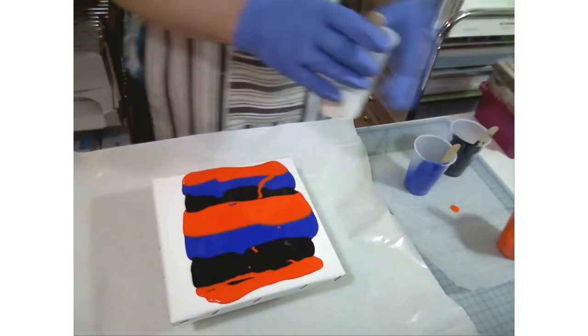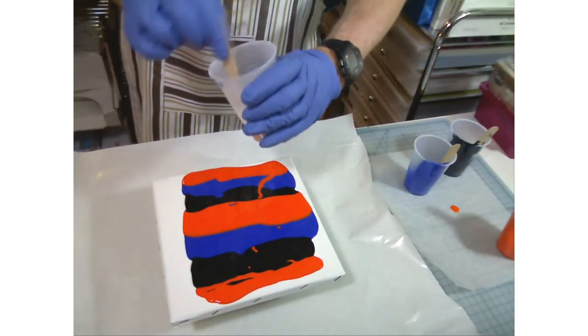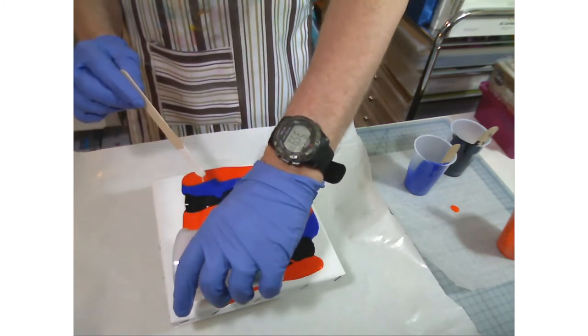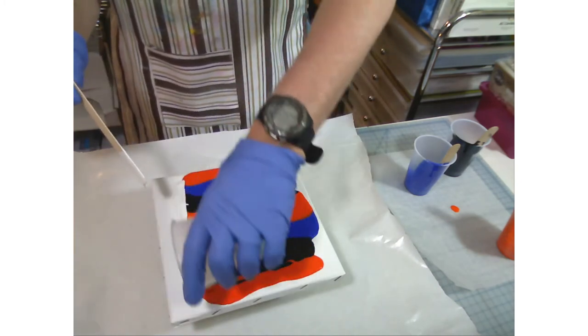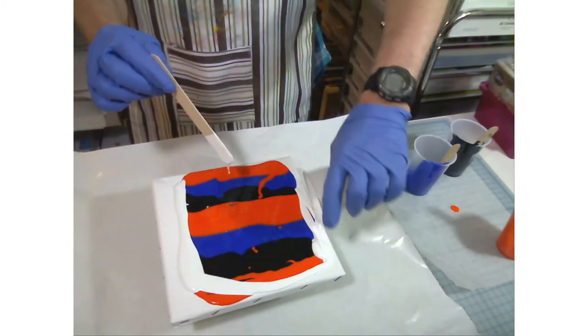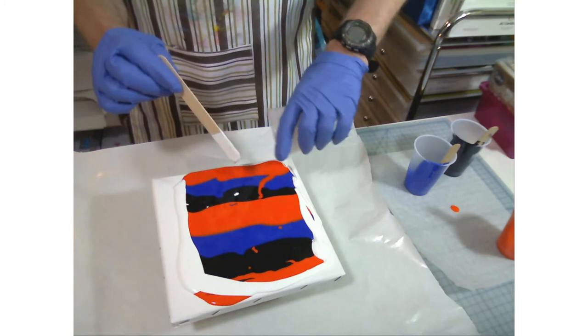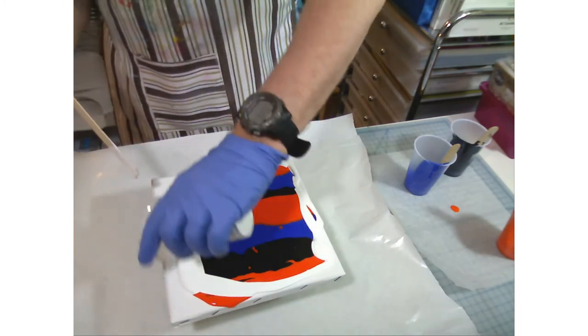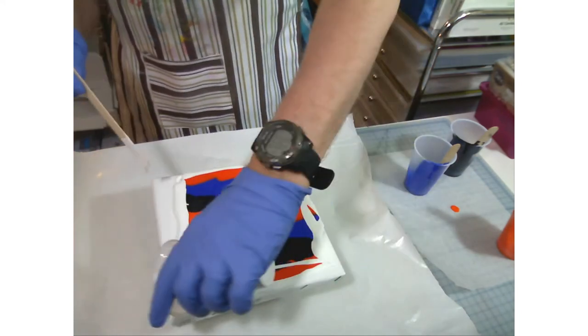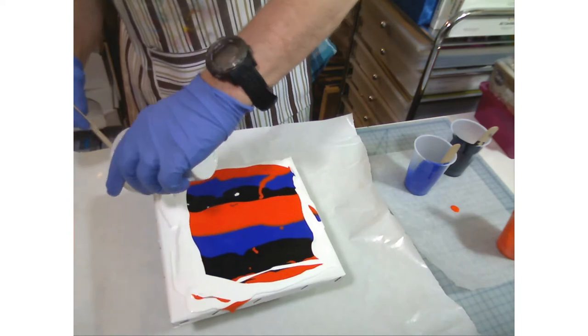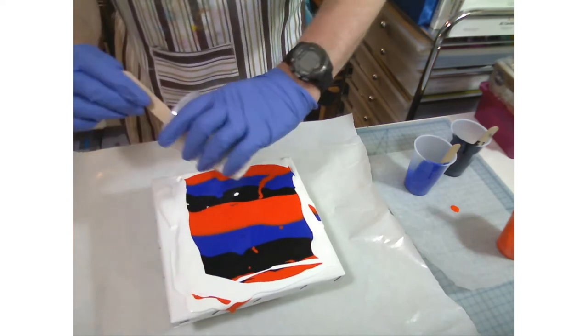I'm going to pour a little bit more of the orange at the top. Now I've got the white, so I'm just going to kind of pour along the edges, all the way around it. I have no idea what this is going to look like.